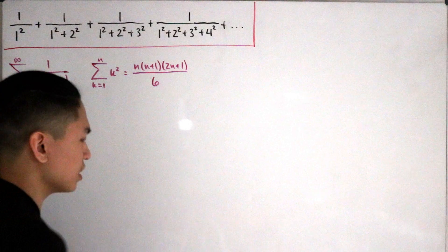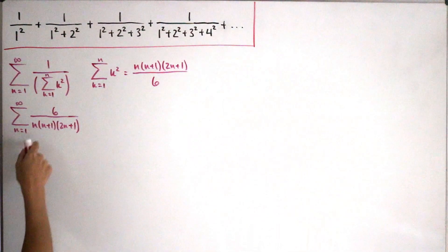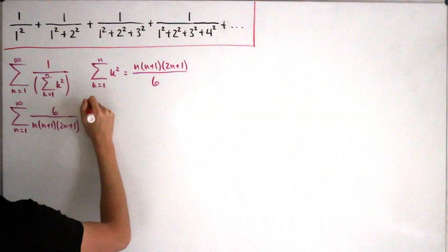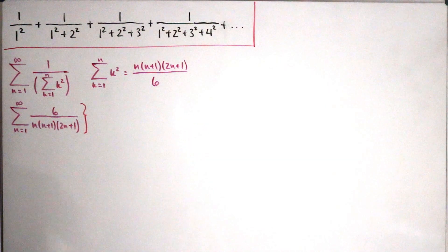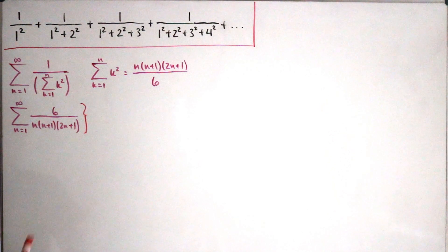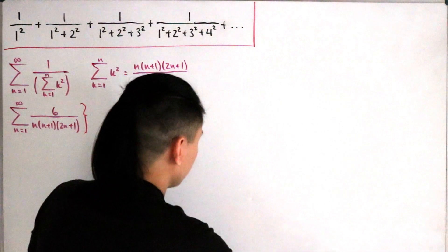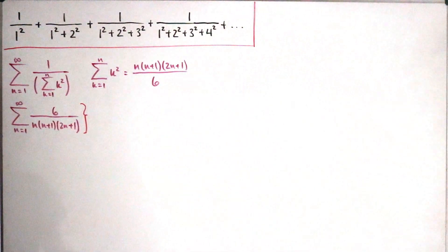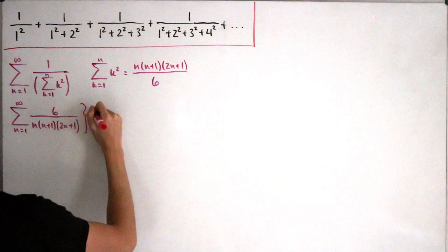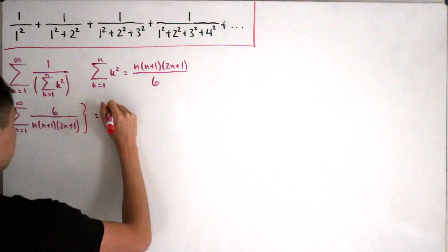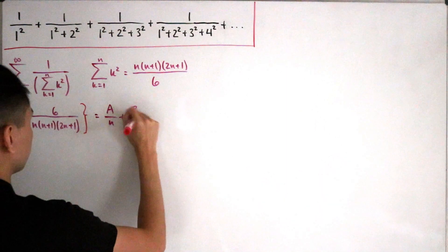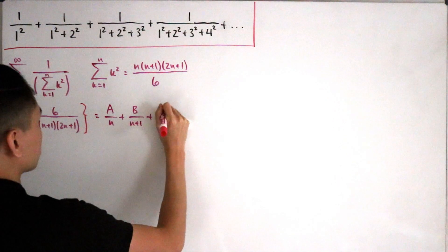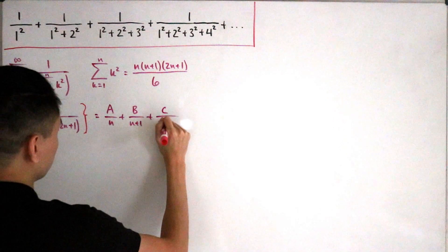We have a product of binomial factors in the denominator, so to make things easier we apply partial fraction decomposition. We can write 6/[n(n+1)(2n+1)] as A/n + B/(n+1) + C/(2n+1). This is straightforward since everything is in terms of linear binomials.